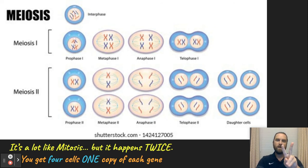So you're going to divide once and make two cells and then you're going to divide again with prophase, metaphase, anaphase, and telophase, a lot like mitosis. But in the end, you end up with four sperm or egg cells that have one copy of each gene by the end of this division.